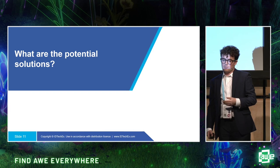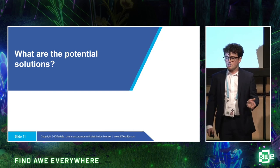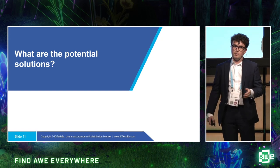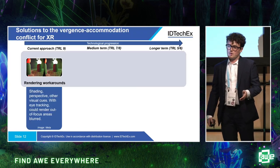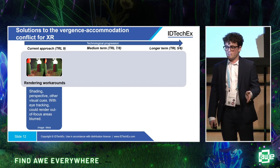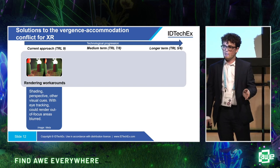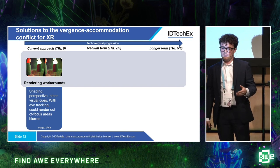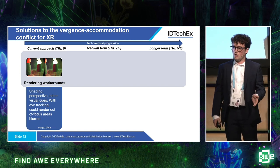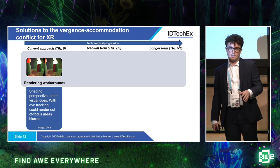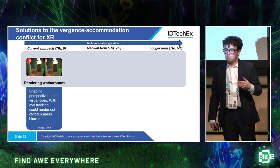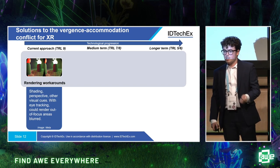I'll now go through the potential solution space, categorized by level of technology readiness — how near-term a solution is — and also how complete the solution is. Looking at approaches available today, we typically use rendering workarounds: altering shading, blurring out-of-focus areas, and if you have eye tracking, doing that even more effectively. You can offer visual cues, but clearly this isn't really a solution — it just reduces our perception of the conflict. So let's move on to the hardware and software-based solutions.